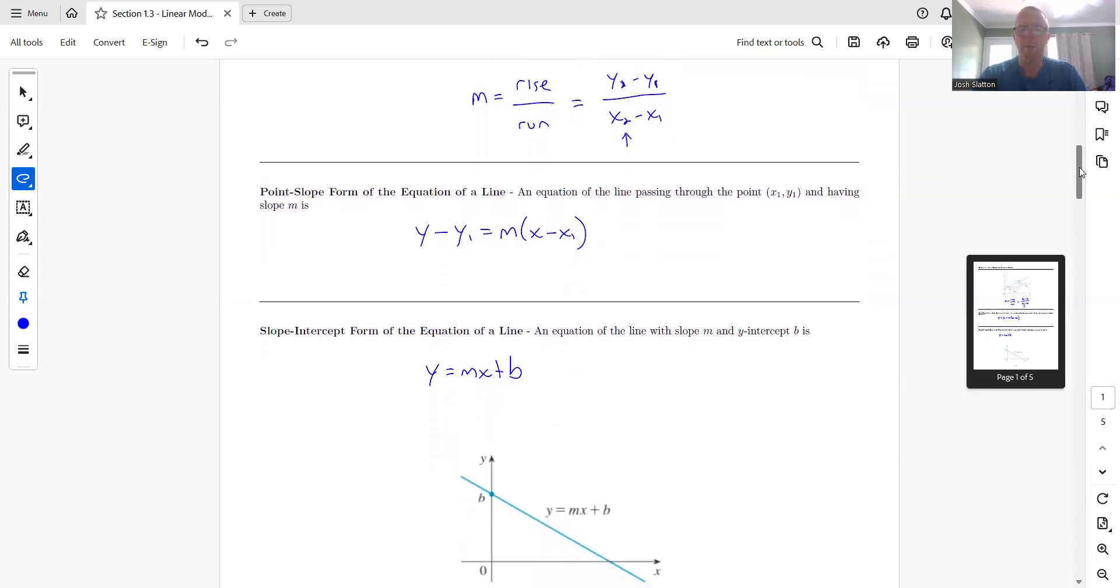And so the way we graph this a lot of times is we start, we plot the y-intercept there, and then, in this case, the slope would be negative since we're going down to the right. And so then whatever the slope is, you'd go down one and over however many, whatever the slope is.